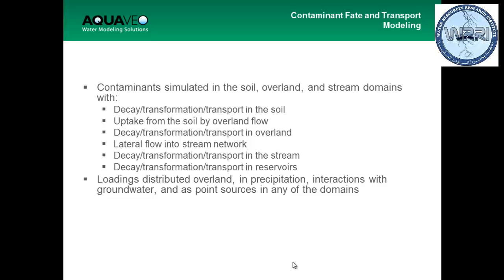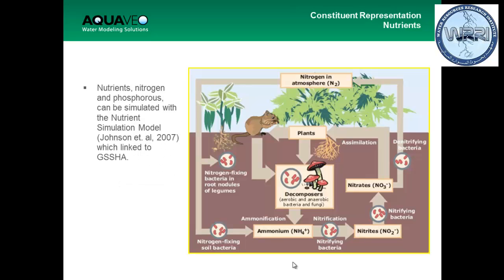Those are the different processes in contaminant transport. You have contaminant transport in your soil, in your overland flow, in your stream network, and in your reservoirs — all these processes happen in all those locations, and GSSHA models all of them. GSSHA also has some nutrient transport options, but I would not recommend using them — it's very complicated, and it doesn't actually work. We added it, but it doesn't work, so don't use it.